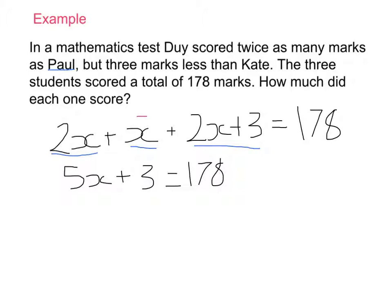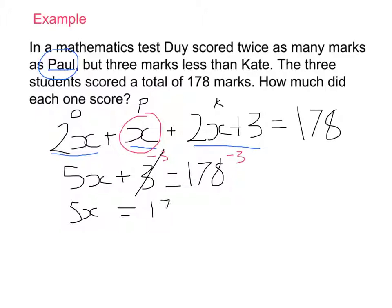When isolating the equation, the X we end up with reflects Paul's mark, since Paul is X. To solve 5X plus 3 equals 178: subtract 3 from both sides to cancel it out, giving 5X equals 175. Divide both sides by 5. X equals 35. So Paul scored 35 marks.